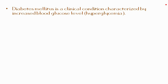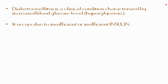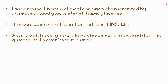Diabetes mellitus is a clinical condition characterized by increased blood glucose level, also called hyperglycemia. It occurs due to insufficient or inefficient insulin — that is, insulin is either not produced in sufficient quantity or it is inefficient in its action on the target tissues. As a result, blood glucose levels become so elevated that glucose spills over into the urine, which provides a convenient diagnostic test for the disease.